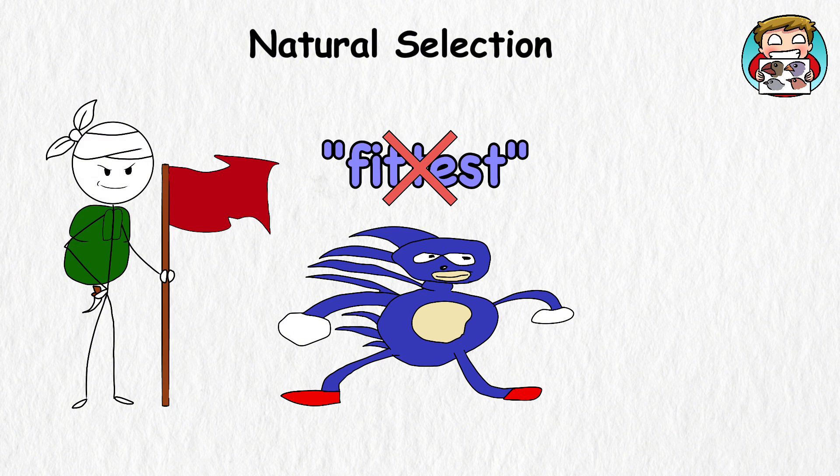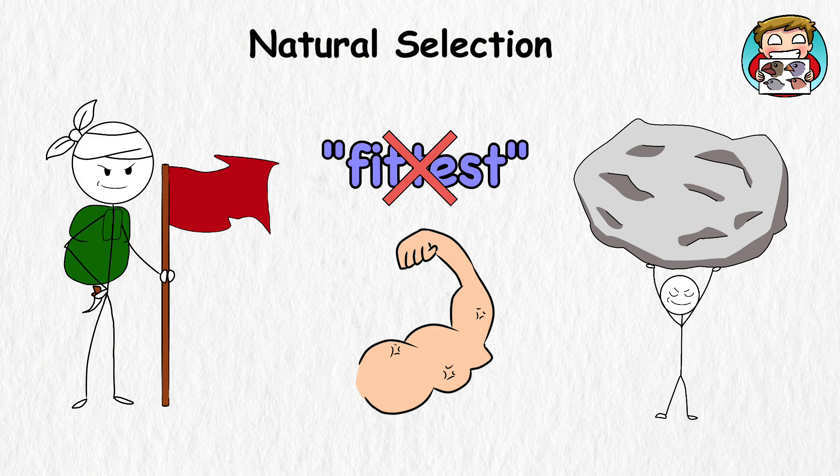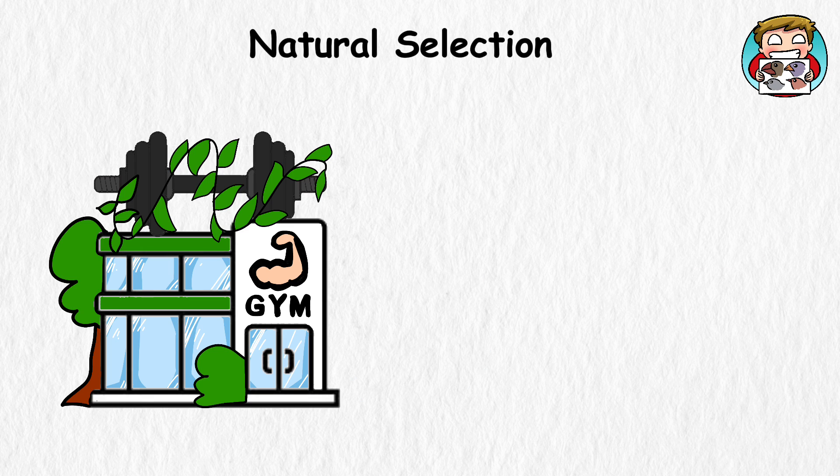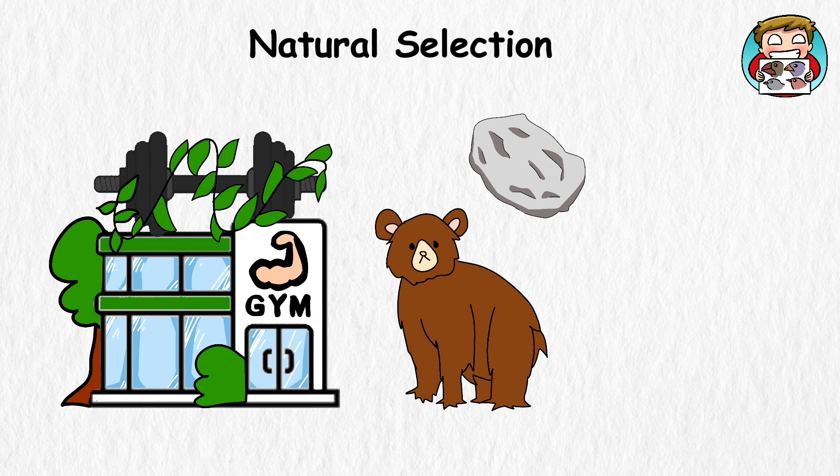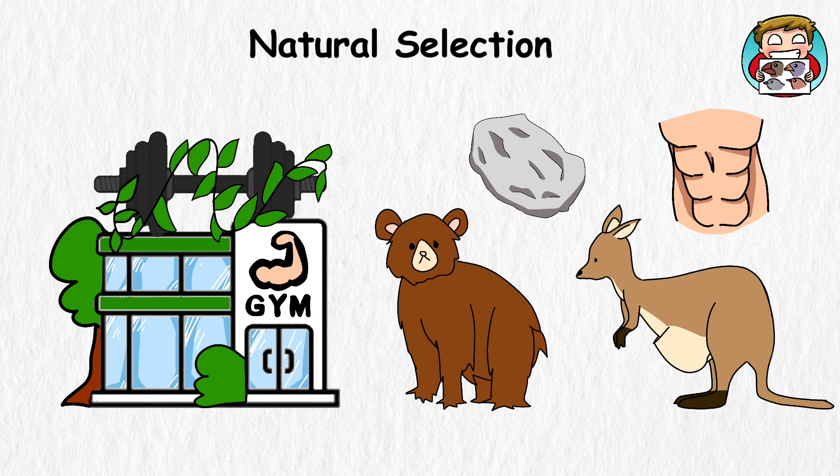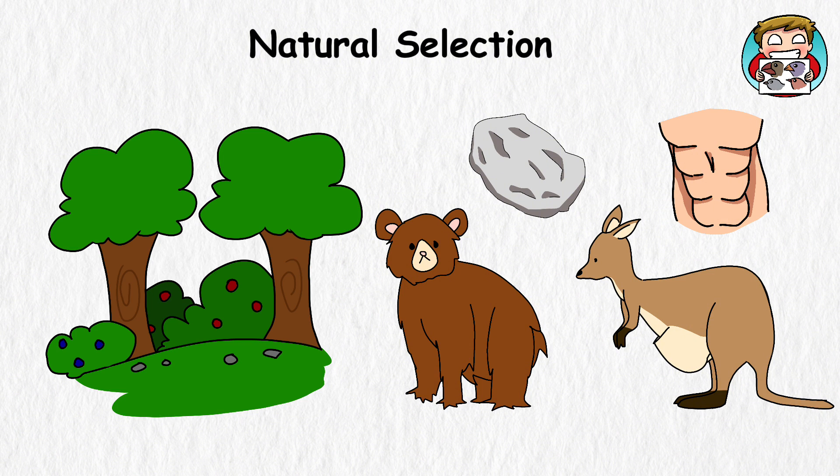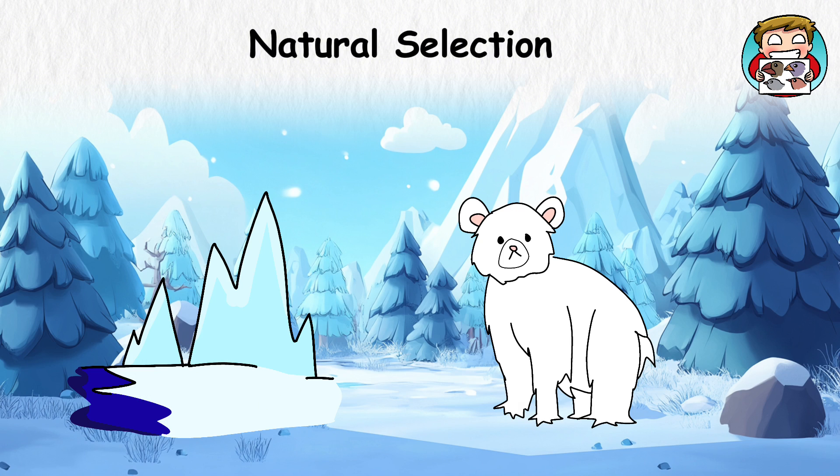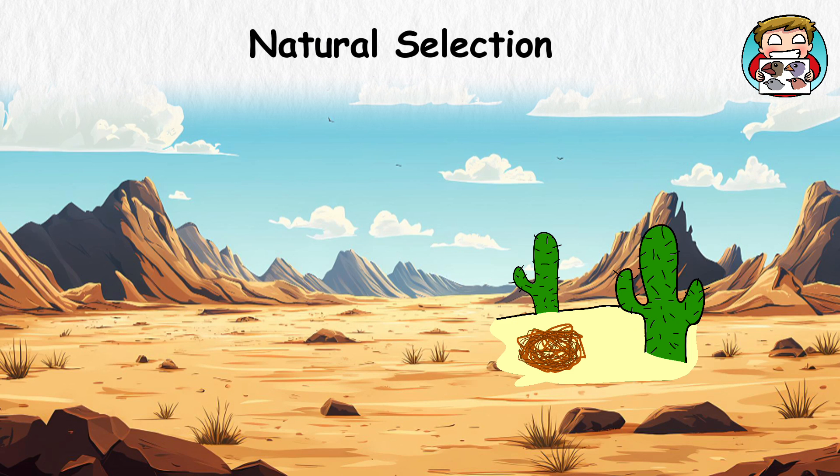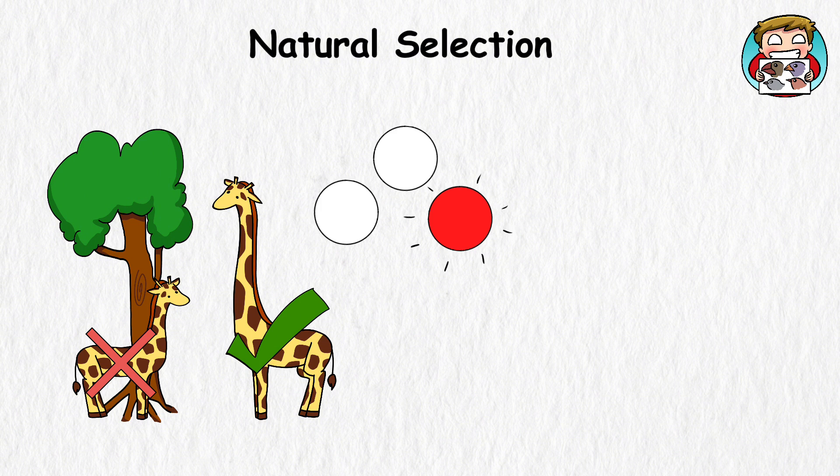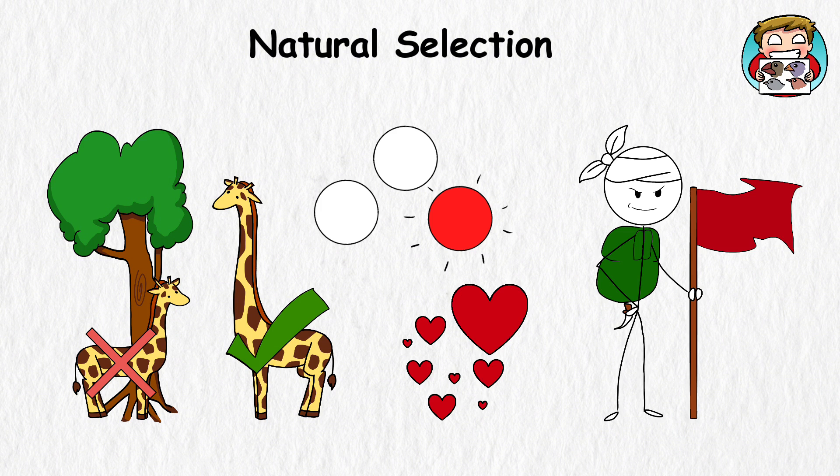Now, fittest doesn't mean the strongest or the ones with bigger muscles. It's not like a nature-themed gym contest where bears bench-press boulders or kangaroos have six-packs. Instead, it's more like how you're suited to your environment. For example, being fit in the Arctic means having the thickest fur. Meanwhile, in a desert environment, being fit means knowing how to conserve water.